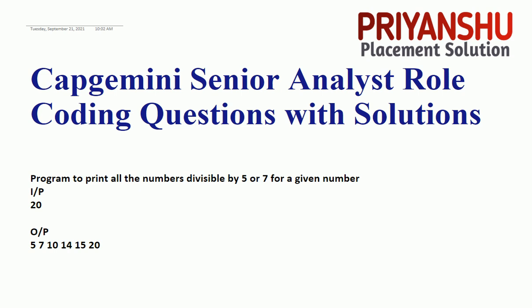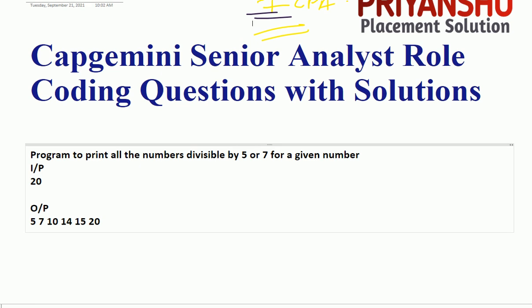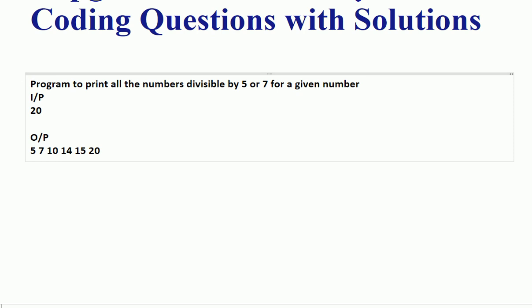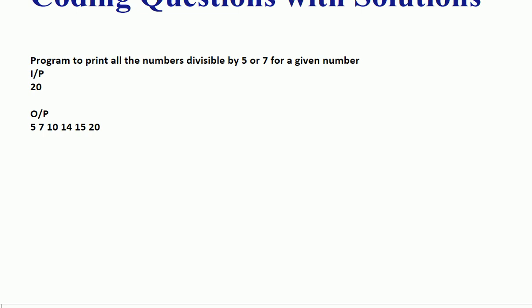This is the first question of yesterday's Capgemini Senior Analyst role. The question is very easy. Write a program to print a number that is divisible by seven and five for a given number. For example, if you have 20, so you need to print this number. Why? Because five is divisible by five, seven is divisible by seven, ten is divisible by five, fourteen, fifteen, and twenty.